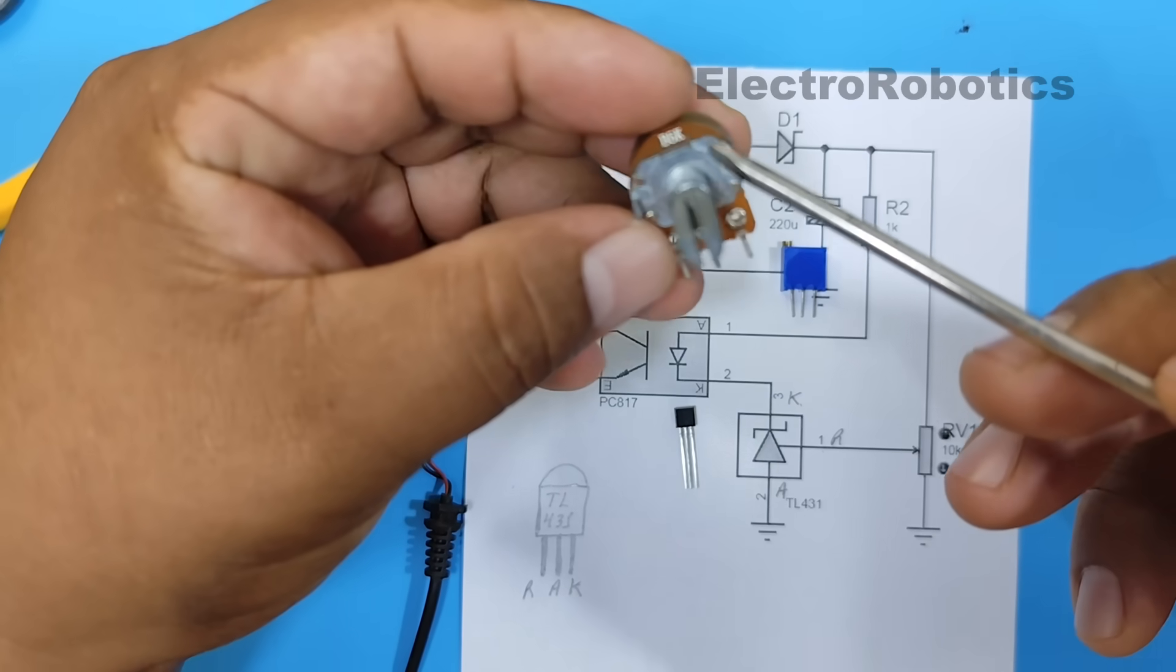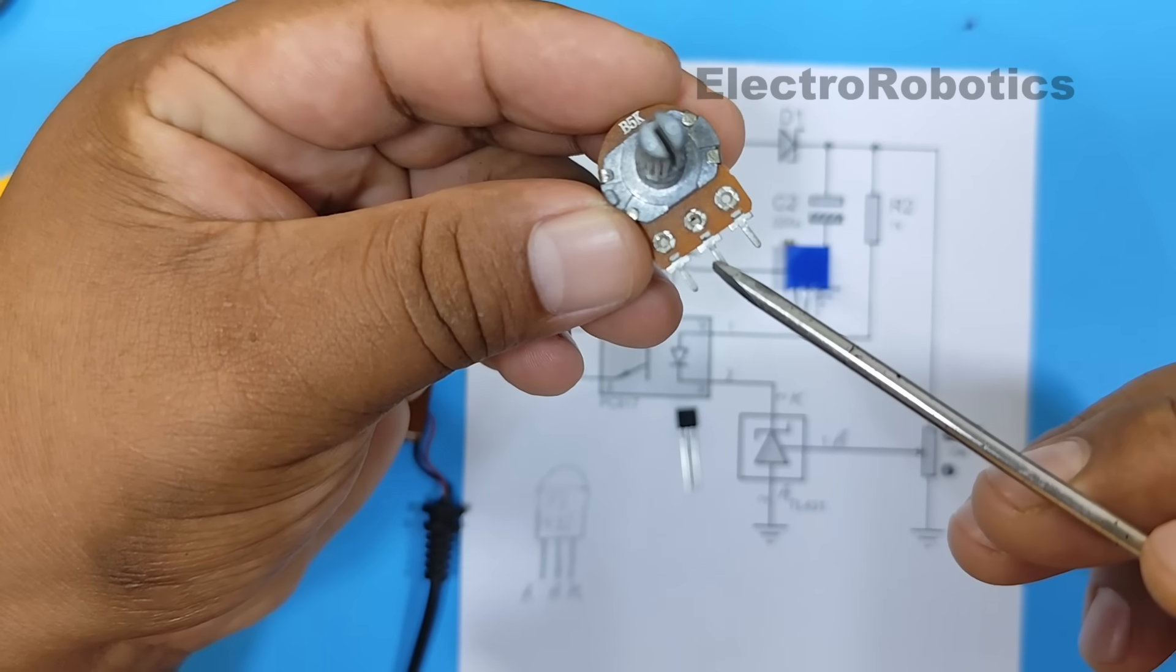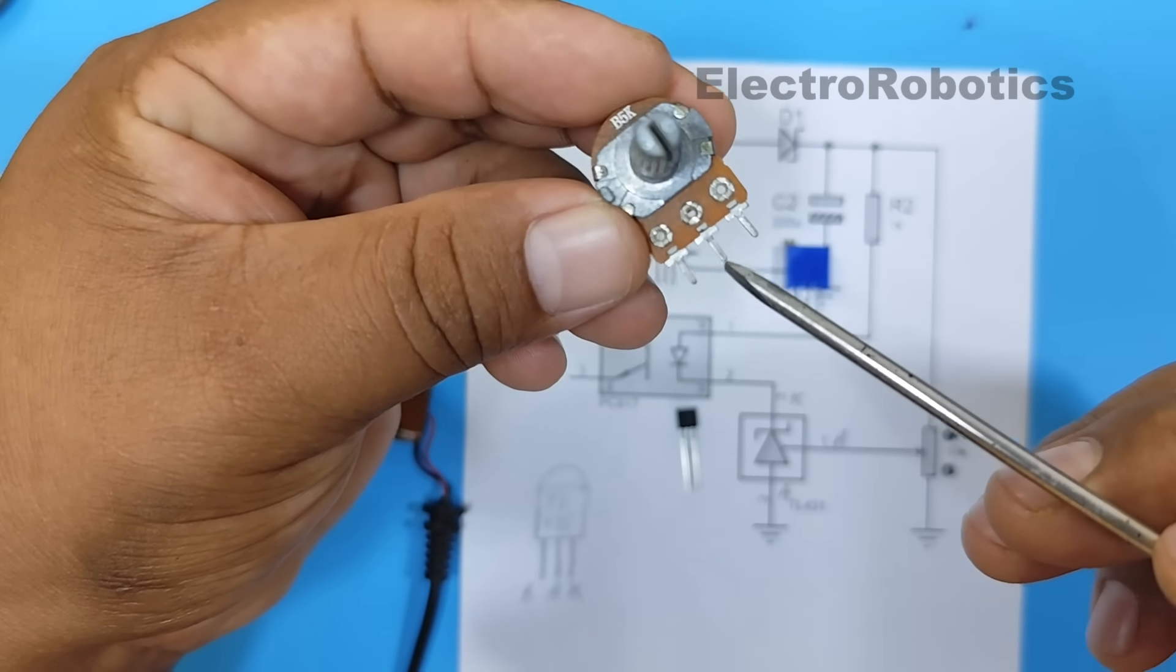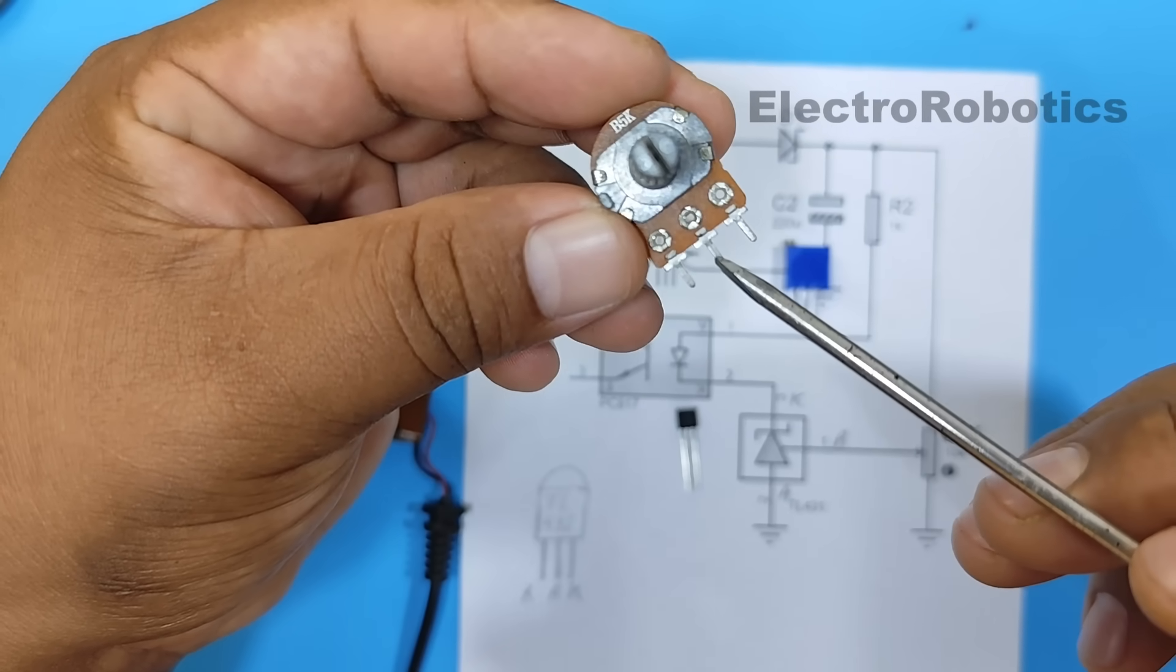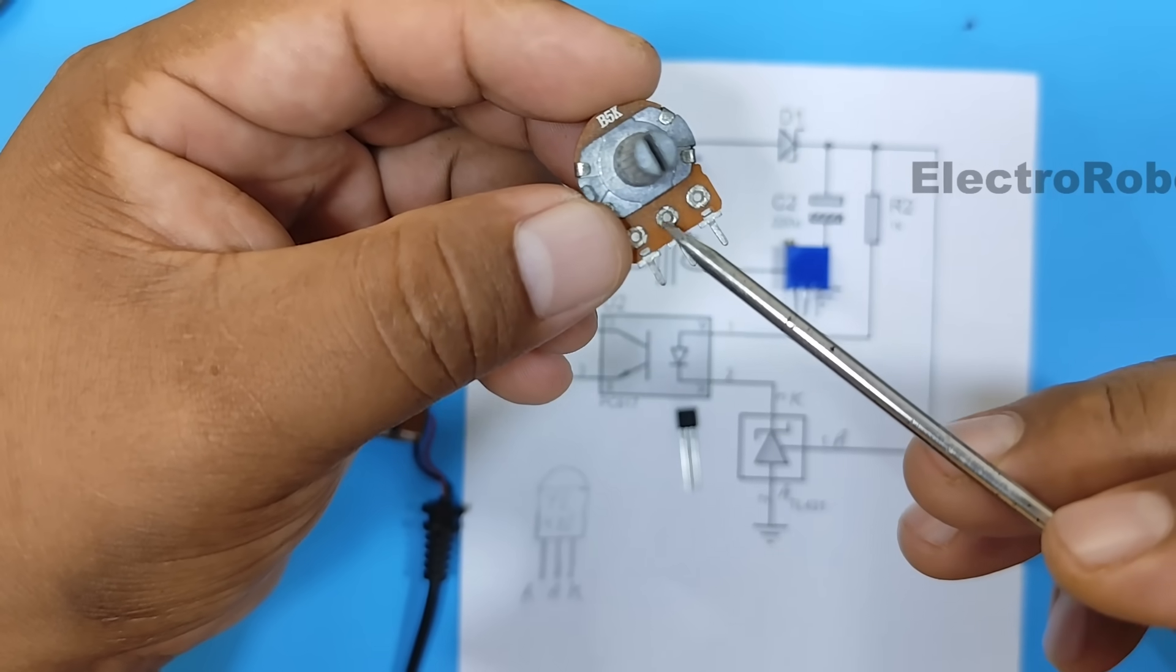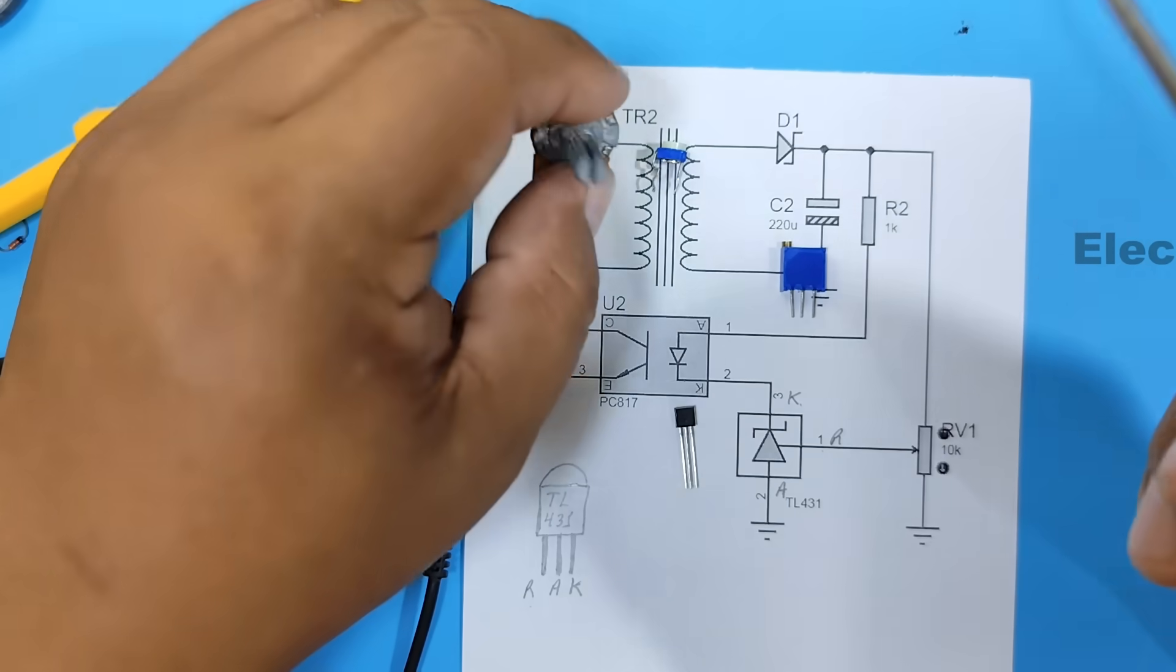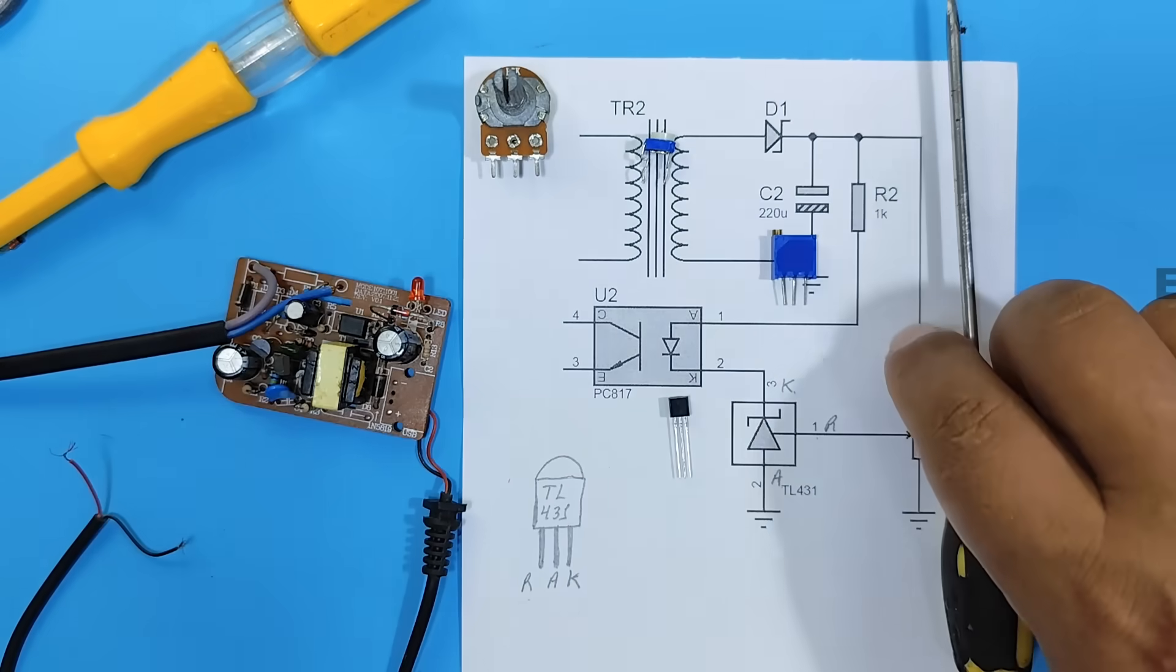It's very important that you set the potentiometer to a midpoint or halfway. So, if your potentiometer is 5 kilo ohms, you have to measure between pin 1 and pin 2, 2.5 kilo ohms, or between pin 3 and pin 2, 2.5 kilo ohms. You absolutely must set it to half the resistance of the potentiometer. Ok, let's move on to assembling the circuit.